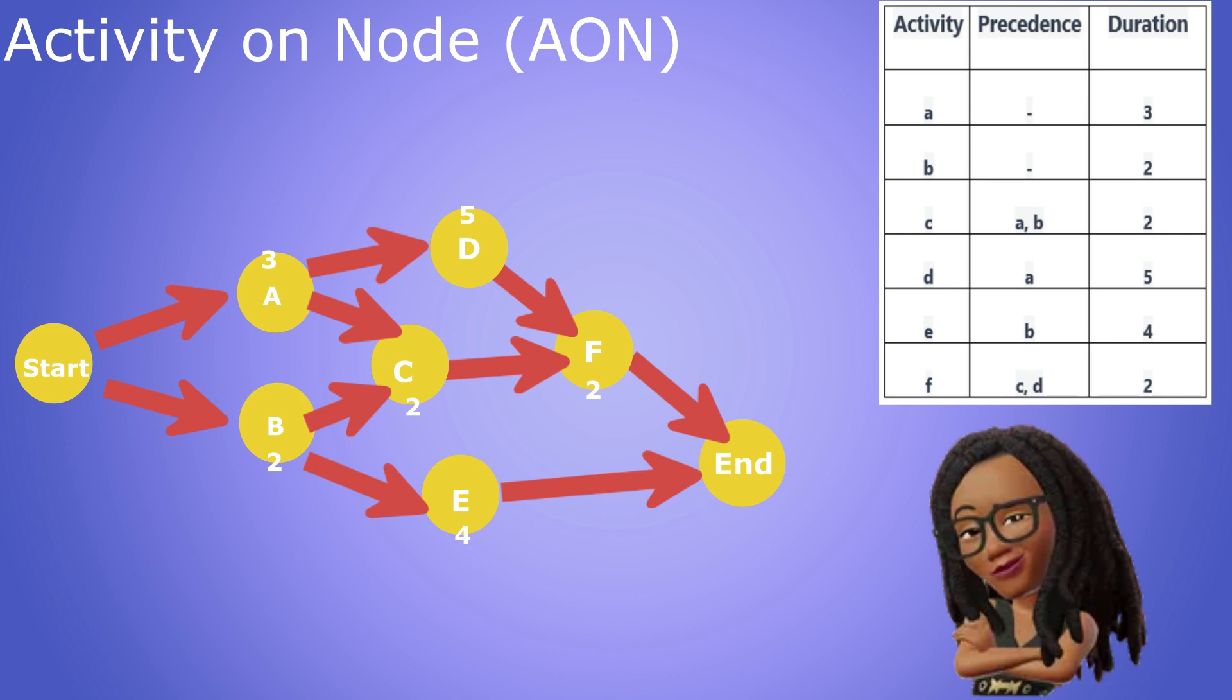In a separate video we will complete what is known as a critical path analysis on this network diagram so that we can calculate the length of the project and determine the earliest and latest times we can start and finish each activity without delaying the project. But for now let's move on to our activity on arrow diagram.